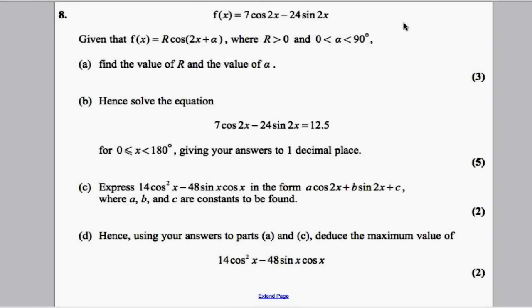The next question is about trigonometry and the R-cos method. It gives us a function here: f(x) = 7cos2x - 24sin2x. Given that f(x) can be written in the form Rcos(2x + α), where R > 0 and 0 < α < 90°, find the value of R and the value of α.